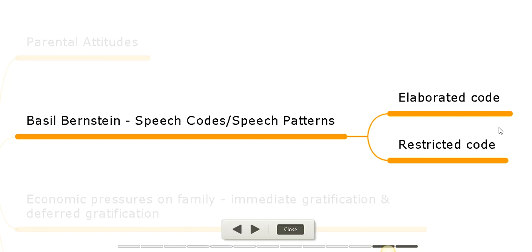To summarize Basil Bernstein's theory: restricted code is used mainly by working class children — it is the language mostly used among friends and family. Elaborated code is used more often by middle and upper class children. This elaborated code features well-developed sentences with wider vocabulary that are longer and grammatically correct. This type of language is mostly used by teachers at school and found in books, and is applied during exams.